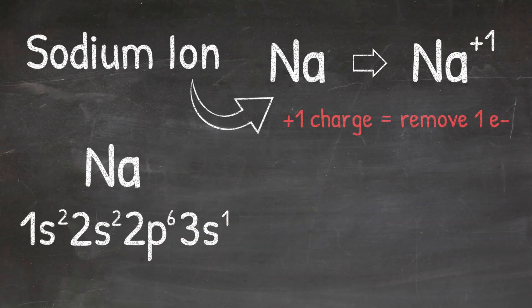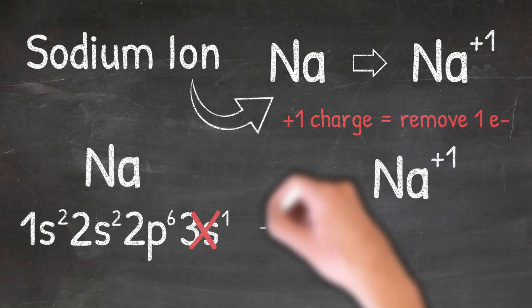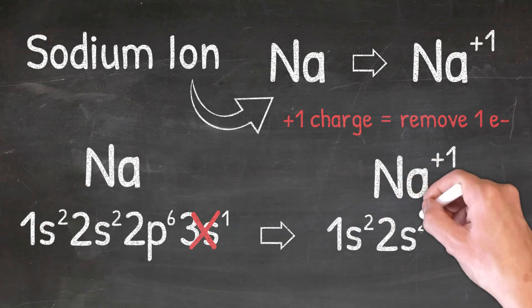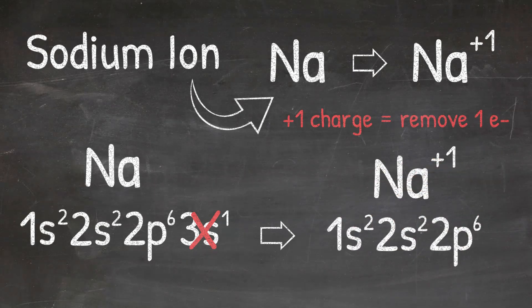Now all we have to do is remove one electron from that electron configuration. The important thing to remember is that we remove the electron from the outermost or the highest energy level. Remember, the big number in front of the letter represents the energy level. For sodium this would be 3, or the third energy level. So we're going to remove that one electron from the 3s orbital, and that's going to give us an electron configuration of 1s2, 2s2, 2p6, which is the electron configuration for the sodium ion.